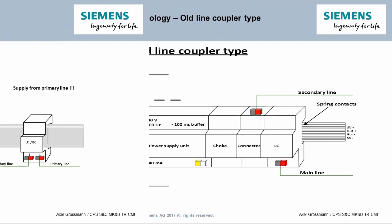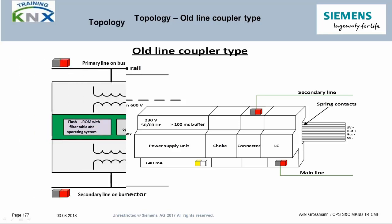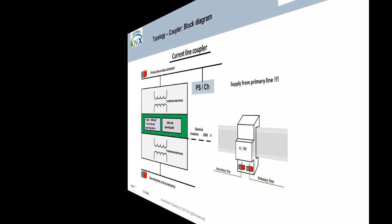It wasn't always like that. In the first couplers, filter tables were stored in a battery-backed RAM memory. These earlier couplers, if they can still be found in existing KNX plants, should all be replaced, as they have not been manufactured since 2003, and therefore even the longest-lasting batteries are likely to be flat by now.